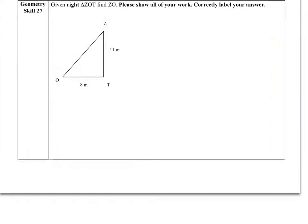Now I'll be doing skill 27. The problem for this skill is, given right triangle ZOT, find ZO. Please show all of your work and correctly label your answer.